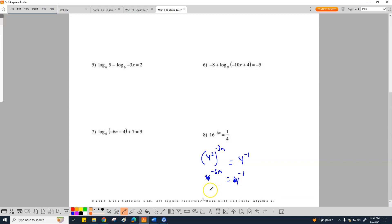And then you end up with negative 6m equals negative 1. Then you can divide out the negative 6 on both sides. That cancels, and your total answer is m equals negative 1 over negative 6, which then reduces down to 1 over 6.